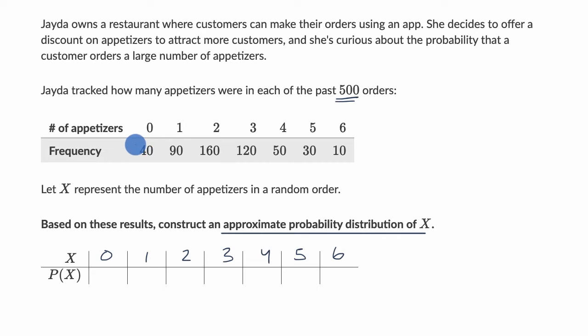Now the approximate probability of zero appetizers is going to be 40 over 500, which is the same thing as four over 50, which is the same thing as two over 25. So I'll write two 25ths right over there.